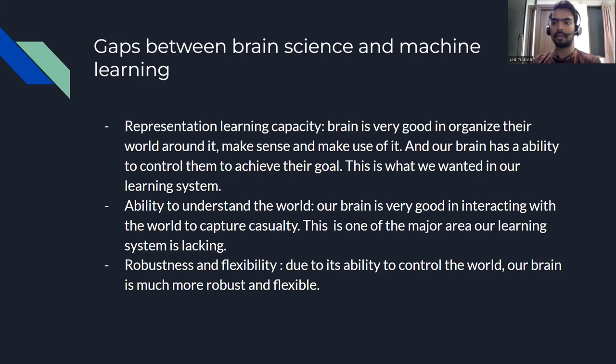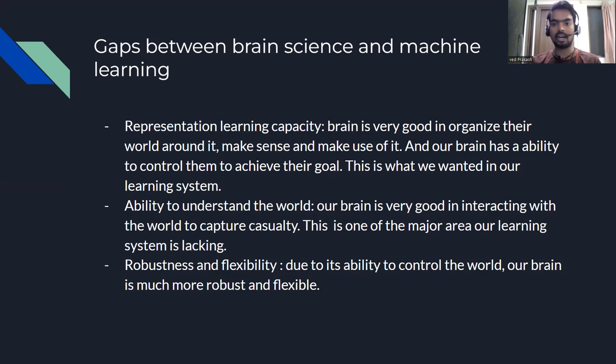We also want our learning systems to interact with the world and capture causal inference — causality. If something is happening in a certain way, our brain has a logical reason for explaining that decision. This is where neural networks are lacking — they are just a black box and are majorly lacking in explaining their decisions. This is one of the major gaps between brain science and machine learning.